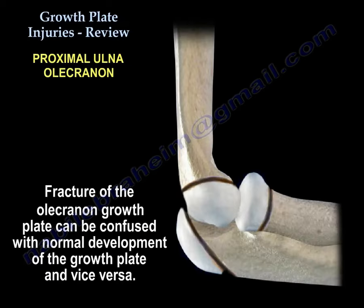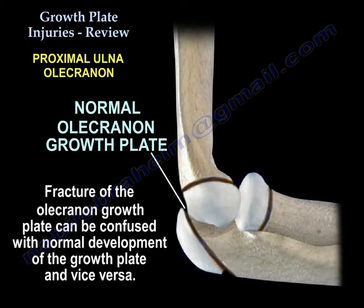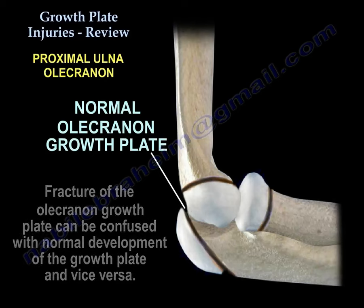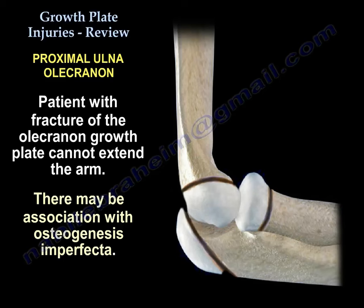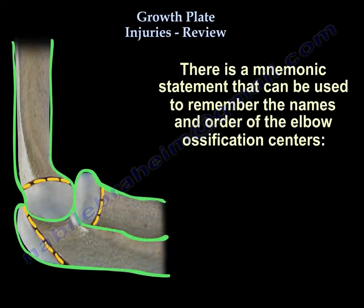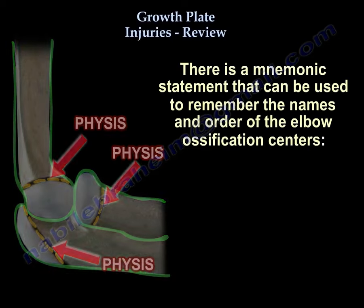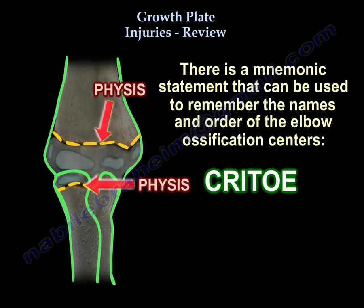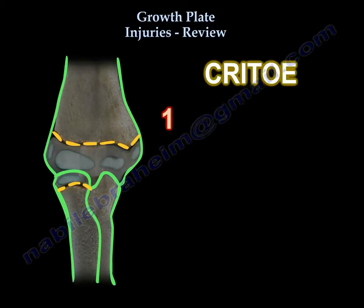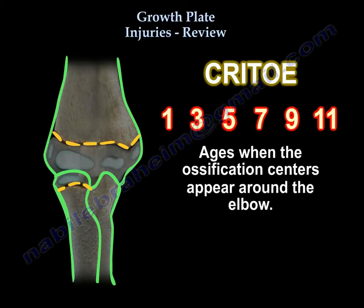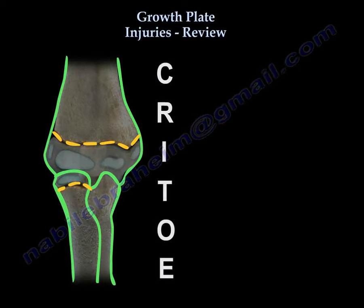At the elbow, olecranon fractures can be confused with growth plates and vice versa. The olecranon ossification center appears at age 9 and fuses at age 16. The patient may not be able to extend the elbow, and there may be an association with osteogenesis imperfecta. You must know when the ossification centers appear around the elbow and their order, using the mnemonic CRITOE — centers appear at ages 1, 3, 5, 7, 9, and 11, with two years between each.